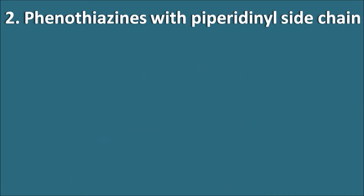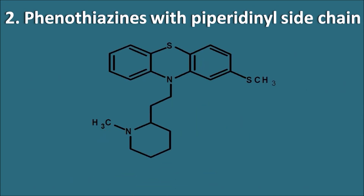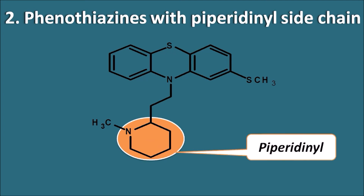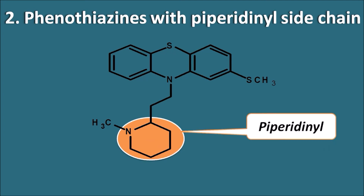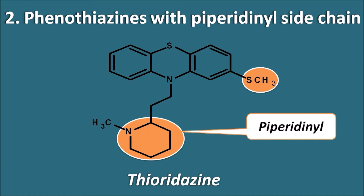Phenothiazines with the piperidine side chain: one structure in this category has a piperidine ring system with a methyl group on the nitrogen and a methylthio group at the second position. This compound is thioridazine.